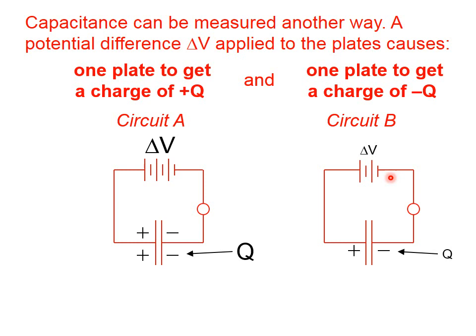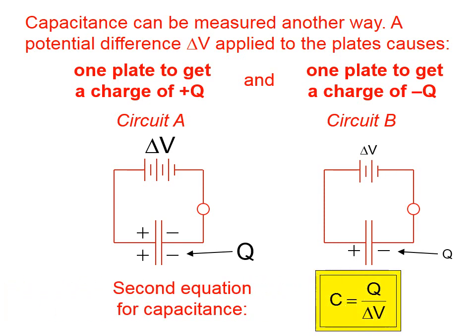Circuit B having fewer batteries can't push as hard, so less charge will be moved. Well, it turns out that the ratio of the charge that's moved to the voltage that moves that charge is a constant. And that ratio we call the capacitance.